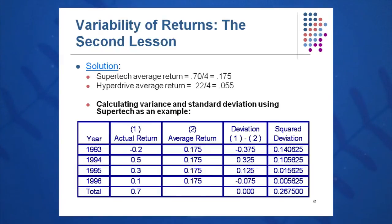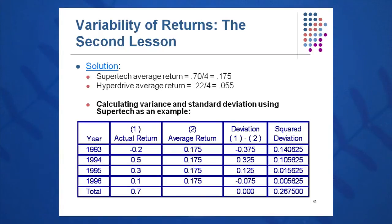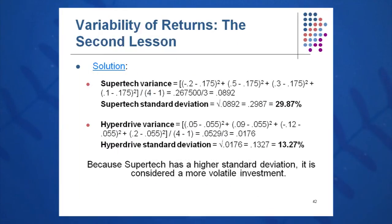Watch your sign carefully: minus 0.2 minus 0.175 is minus 0.375; 0.5 minus 0.175 is 0.325, and so on down the column. Note that the sum of the deviations should equal zero — if your math is correct, they will. Step three: square the deviations to eliminate the negatives and sum those squared deviations. Take minus 0.375 and square it, 0.325 and square it, 0.125 and square it, and so on. Use six to eight decimal places, then sum all the squared deviations.